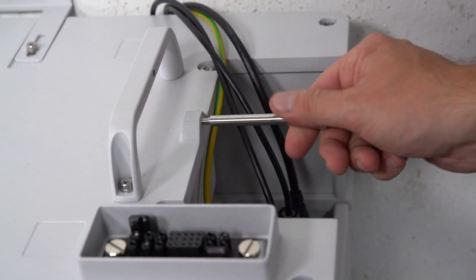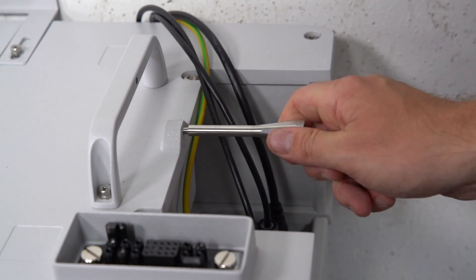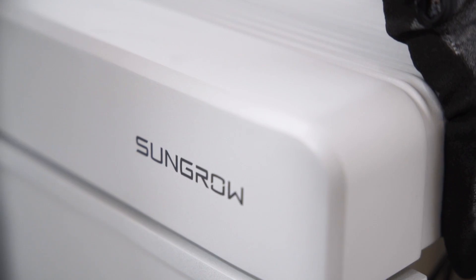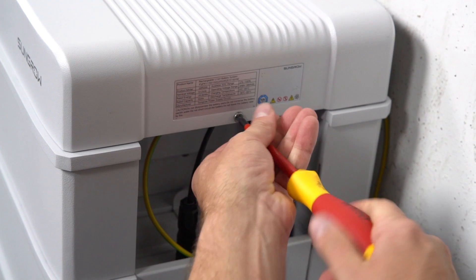Make sure that all cables are correctly positioned to fit into the intended recess in the cover of the battery. Place the cover on the battery and fix it on both sides with the included M5 screw. Clip in the side cover. That's it, quick and easy, beyond the expected.